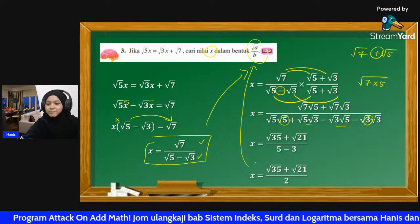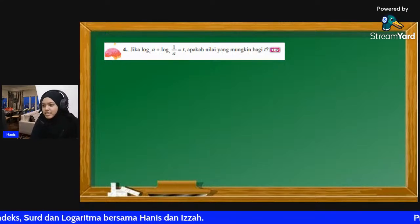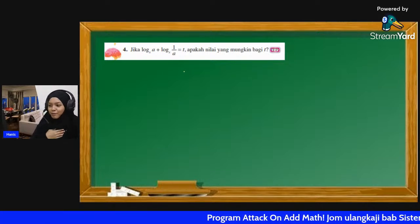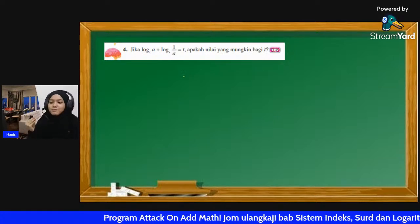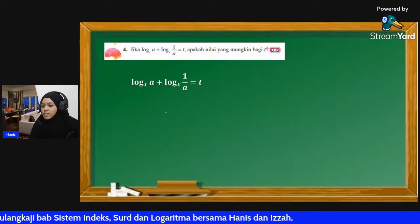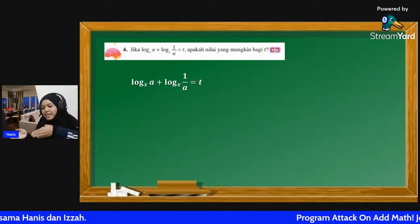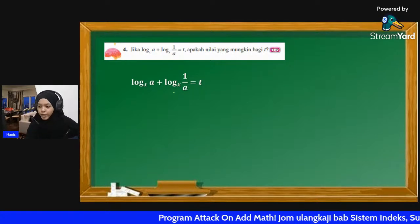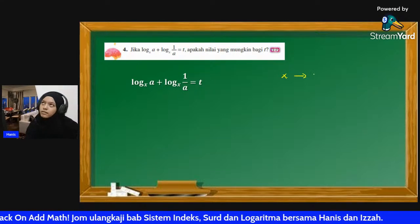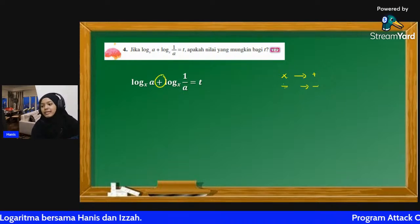Soalan empat: Jika log_x(A) + log_x(1/A) = T, apakah nilai yang mungkin bagi T? Bila dengan soalan log je kita dah start rasa susah - tapi practice make perfect. Sekarang ni kita tengok - ingat benda yang kita boleh faktorkan. Benda yang sama kita faktorkan, benda yang tak sama kita letak dalam satu bracket. Ingat hukum log: kalau darab dia adalah tambah, kalau bahagi dia adalah tolak. Sekarang ni dia tambahkan, so maksudnya dia darab.